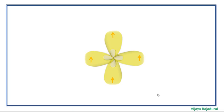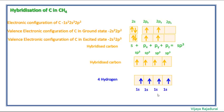After hybridization of carbon, overlap with 4 hydrogen atoms, forming 4 CH sigma bonds.